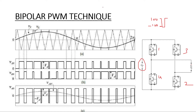Now we will see how we are generating these bipolar pulses. First of all, we need one reference and one carrier. The reference is our sine wave and the carrier is our triangular wave. Now how we are generating the pulse: when the reference voltage becomes greater than the carrier voltage — when sine is greater than our triangle — one pulse will generate. When this pulse generates, it is fed to our switches.